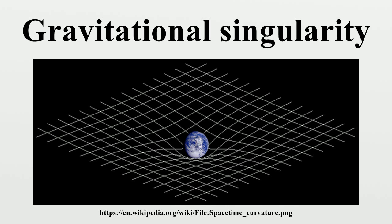The two most important types of space-time singularities are curvature singularities and conical singularities. Singularities can also be divided according to whether or not they are covered by an event horizon.